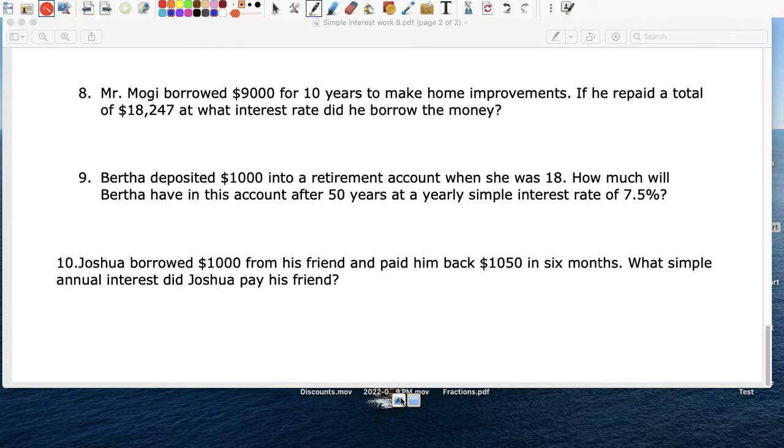Number 10. Last question. Joshua borrowed, so again, I equals PRT. He borrowed $1,000. So that's our principal. He paid him back after six months. So the interest rate is what they're asking. What's the annual interest rate? So that's the harsh standard that is. The time is six months. Six months is 6 over 12.